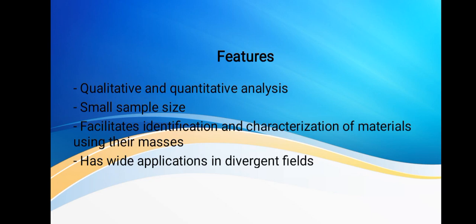Features of mass spectrometry: both qualitative and quantitative analysis occur. It works with small sample sizes. It facilitates the identification and characterization of materials using their masses. Mass spectrometry has wide applications in various fields—that is, it can be used in fields like chemistry, molecular biology, geology, forensics, and many more.